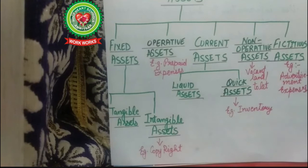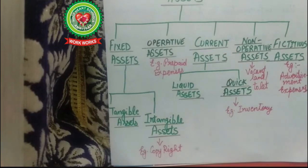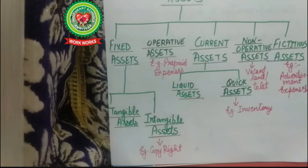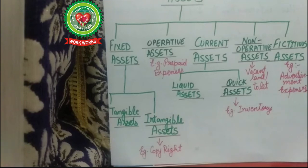Next is fictitious assets — for example, advertisement expenses. When I am promoting my school through pamphlets, prospectus, newspaper ads, Facebook, YouTube, or by arranging seminars, certain expenses are incurred for all those purposes. Those are our fictitious assets — the benefit of which you will receive later on. Fictitious assets are those assets that give you a benefit after a certain period.